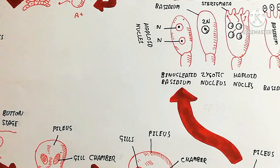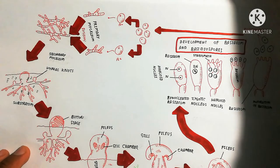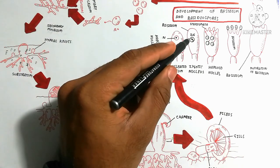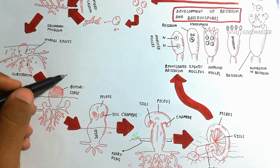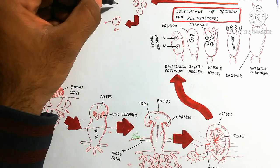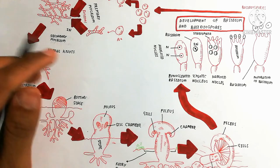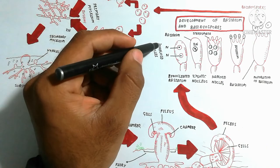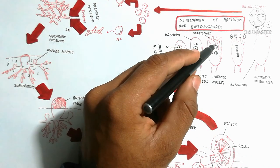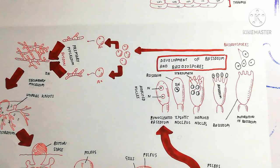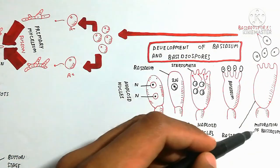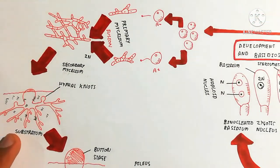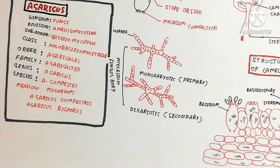In asexual reproduction, basidiospores produce primary mycelium asexually. Secondary mycelium is produced by the combination of two haploid (1N + 1N) nuclei to produce diploid (2N). Vegetative reproduction occurs by the detachment of mycelium from the parental body. That covers everything related to Agaricus — basidiospores lead to primary and secondary mycelium by combination. Thanks for watching; please subscribe to the channel.